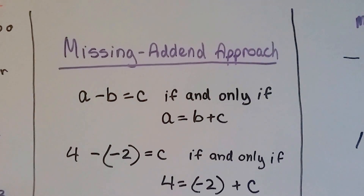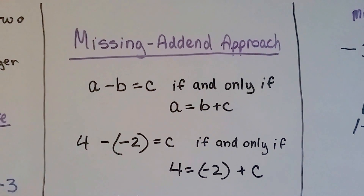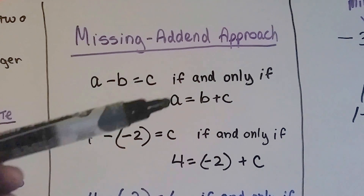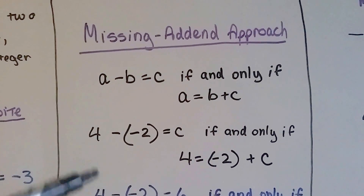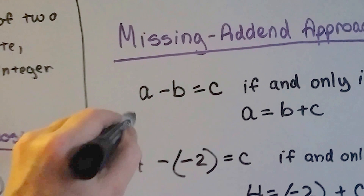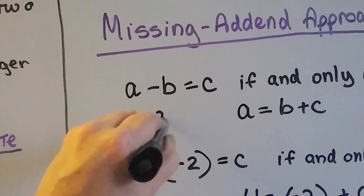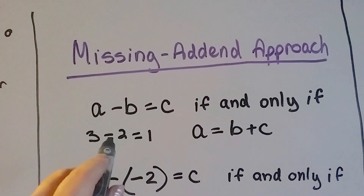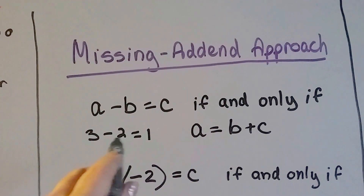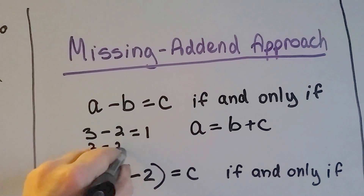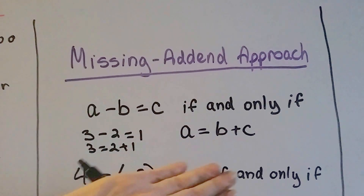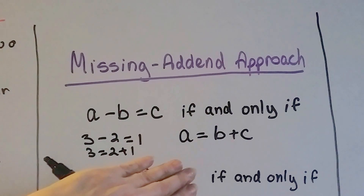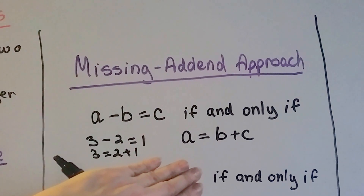Here's one called the missing addend approach. This might be a little above your level, but I want to show it to you. It says: A minus B equals C if and only if A equals B plus C. So, 3 minus 2 equals 1 if and only if 3 equals 2 plus 1. That's using more regular numbers without the negative and positive. It makes sense, right?